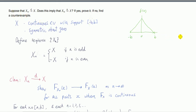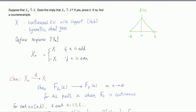Proof by counterexample. For my example, I'm going to take X to be a continuous random variable with support minus b to b and symmetric about zero. So here's what the PDF of it could look like.